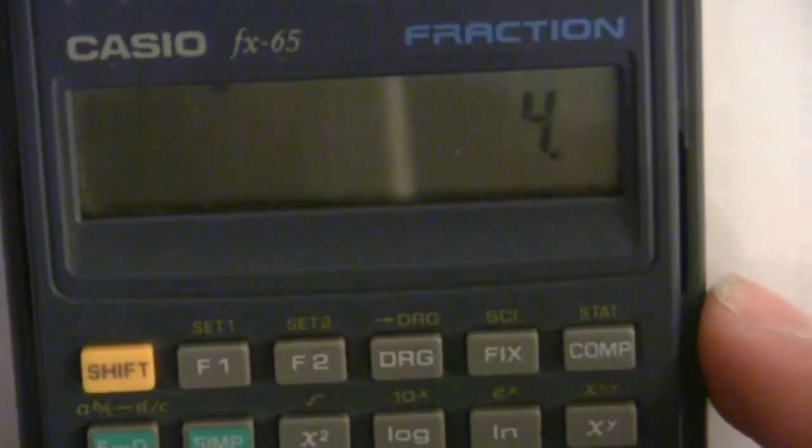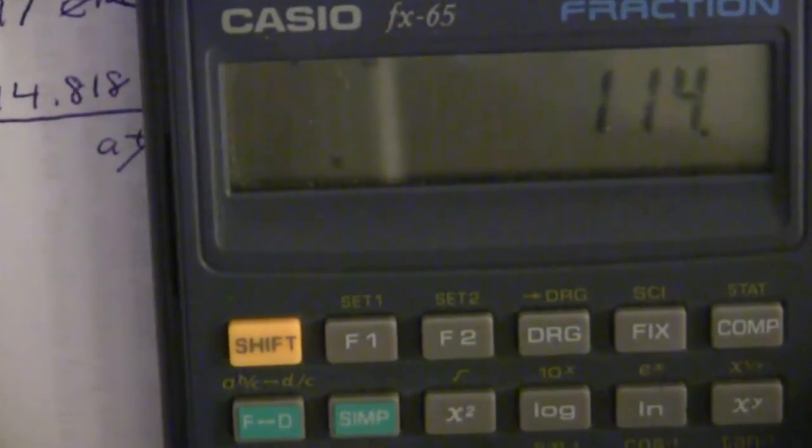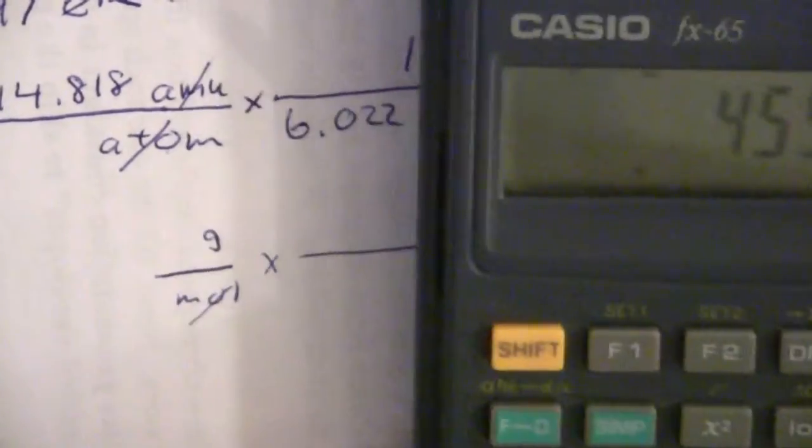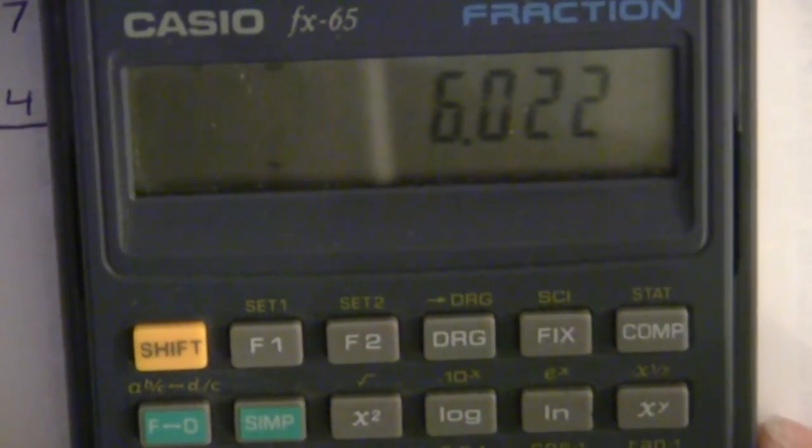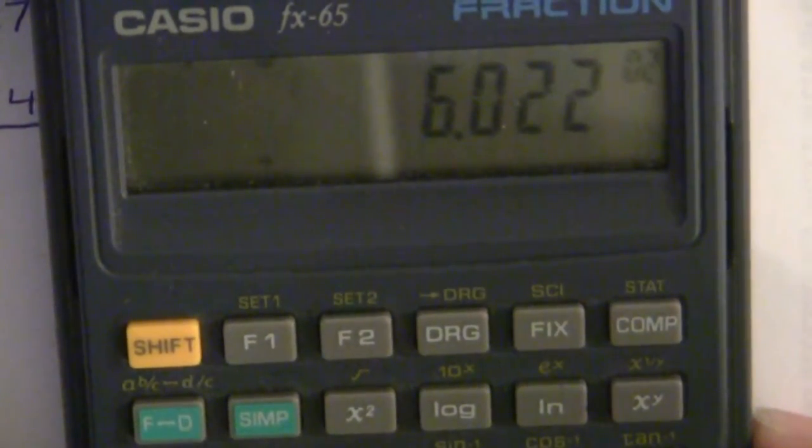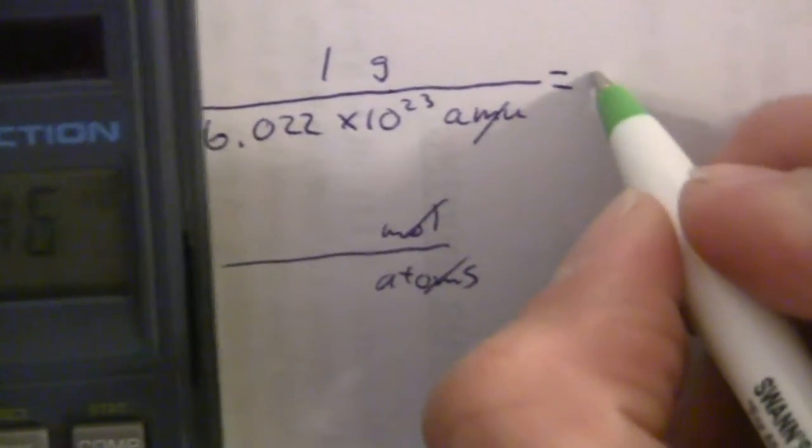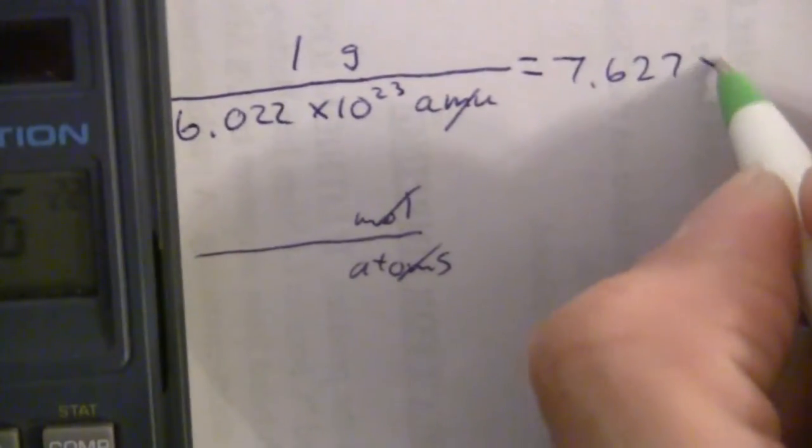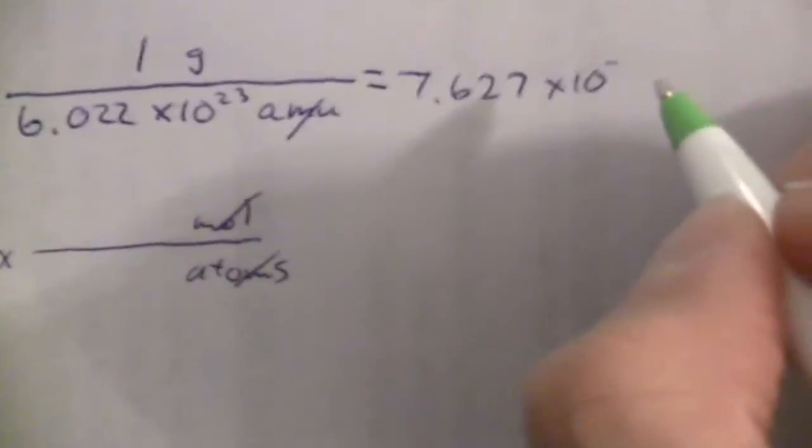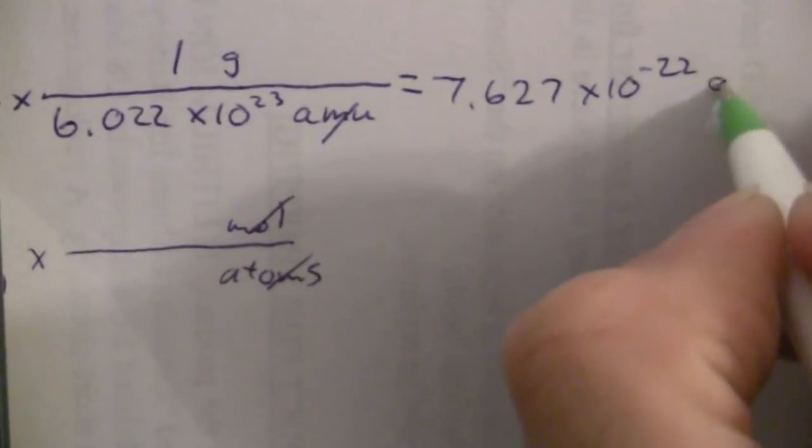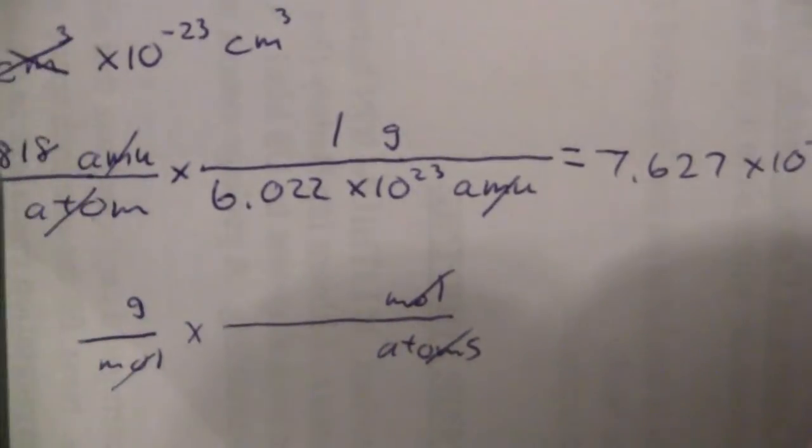And what I end up with is 4 times 114.818 divided by 6.022 exponent 23rd equals 7.626 or 627 times 10 to the minus 22. 7.627 times 10 to the minus 22 grams.